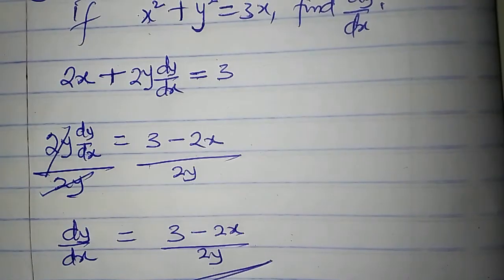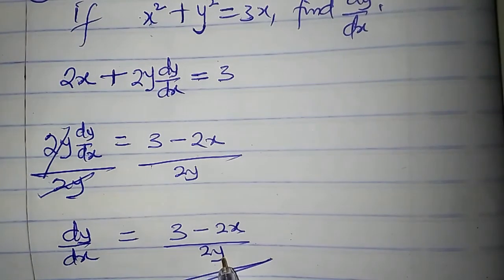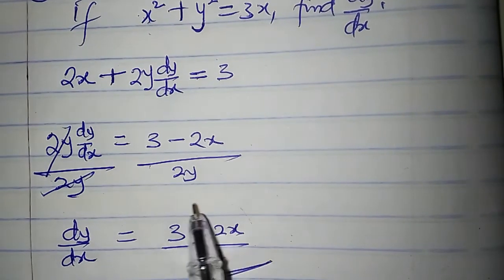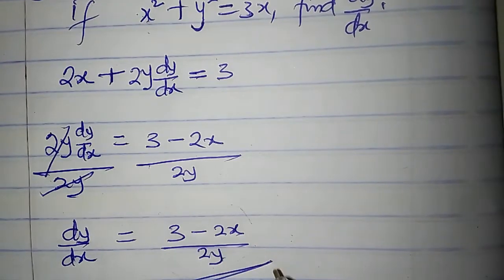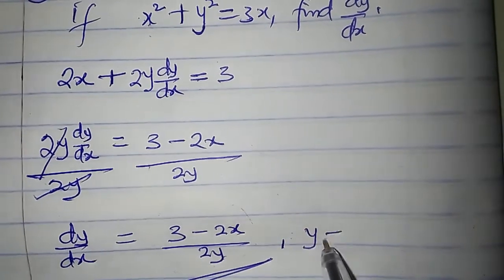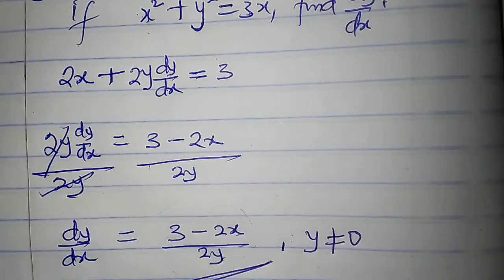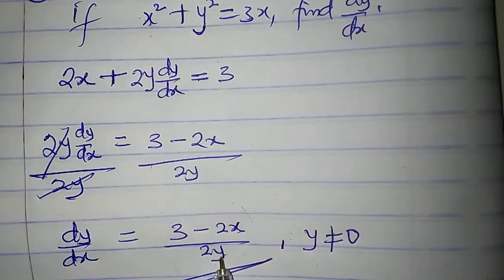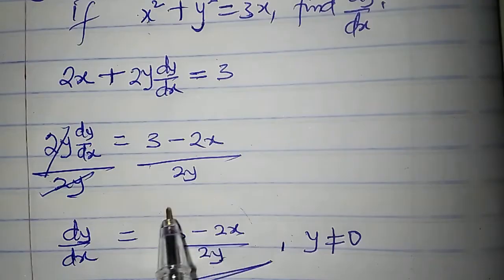We can note one exception: if y is equal to 0, this entire derivative will be undefined. So we can say y is not equal to 0, because if y is 0, the result becomes undefined.